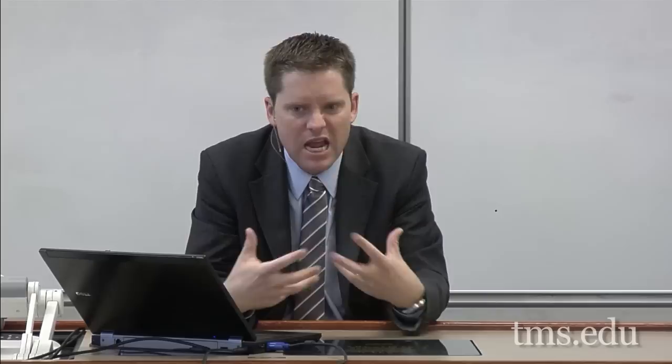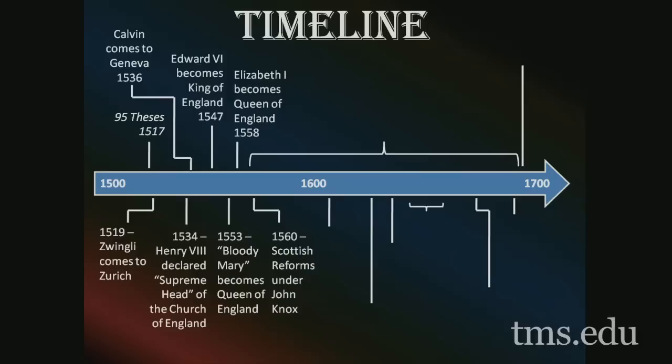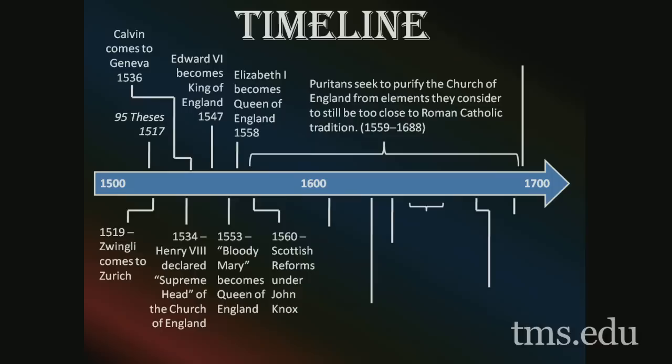John Knox went back to Scotland in the 1560s, and Scotland had a much more aggressive Reformation than took place in England. From 1559 all the way through to 1688 — for 150 years after the Reformation — the Puritans sought to purify the Church of England from elements they still considered too much of a throwback to Roman Catholic traditionalism. It would be a continual struggle.